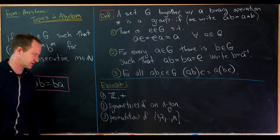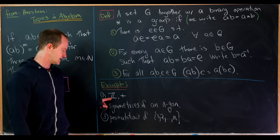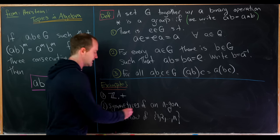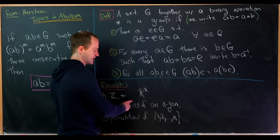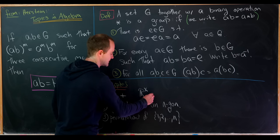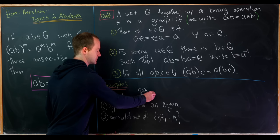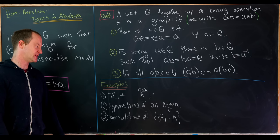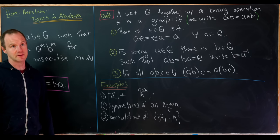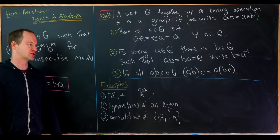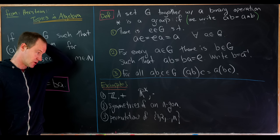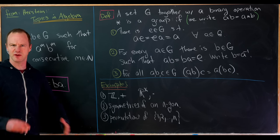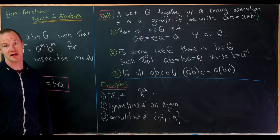Let's look at some basic examples. First, the integers with addition. Another one would be the non-zero real numbers with multiplication. A nice geometric example would be symmetries of an n-gon — they have reflection symmetries and rotational symmetries. Or permutations of the set one to n, which are ways of mixing the numbers one to n up.